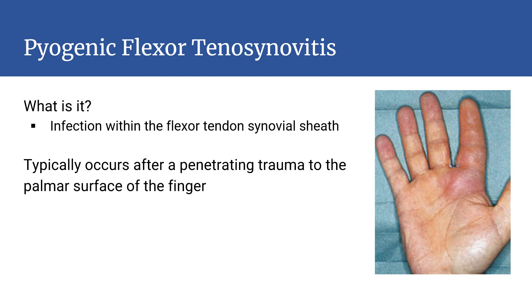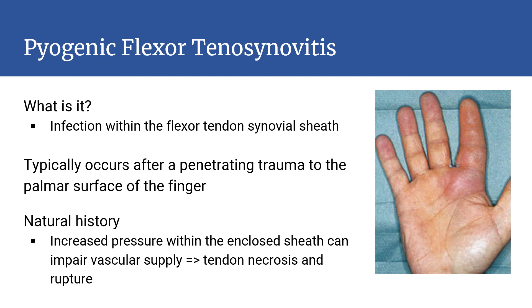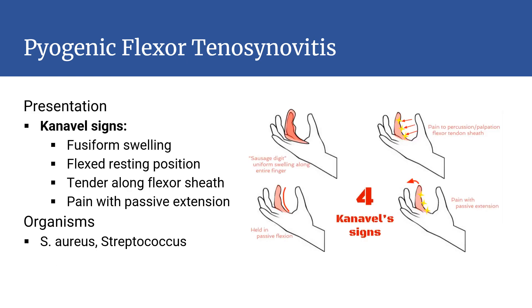Pyogenic flexor tenosynovitis is an infection within the synovial sheath, usually occurring as a result of penetrating trauma to the palmar surface of the finger. As the purulence within the sheath expands, it can impair vascular supply and result in tendon attrition and subsequent rupture. The four cardinal signs of flexor tenosynovitis, as described by Kanavel, include: 1) fusiform swelling of the finger digit; 2) partially flexed posture of the digit; 3) tenderness over the entire flexor tendon sheath; and 4) disproportionate pain on passive extension.